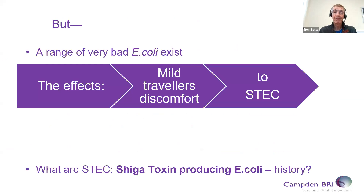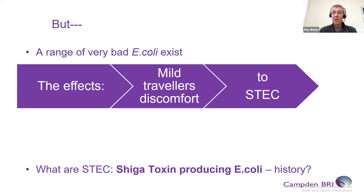But there are a range of very bad E. coli out there, and these can cause a range of types of illness going from mild traveler's diarrhea right through to the very drastic illness that can be caused by Shiga toxin-producing E. coli. When we think about STEC, some people might still be using the term VTEC — verocytotoxin-producing E. coli. Those two acronyms, VTEC and STEC, are absolutely identical. They mean exactly the same group of microorganisms.